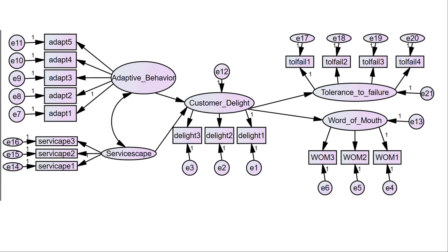The model you see here was taken from a restaurant setting. The premise of the model is we asked customers about their server's behavior — did the server adapt their behavior to the customer, and did that lead to customer delight? That delight subsequently influenced spreading word of mouth and even tolerance to future failures. We also included a construct called servicescape, which is basically the built environment around a service — whether the setting was very nice, average, or low — and whether that environment contributed to customer delight.